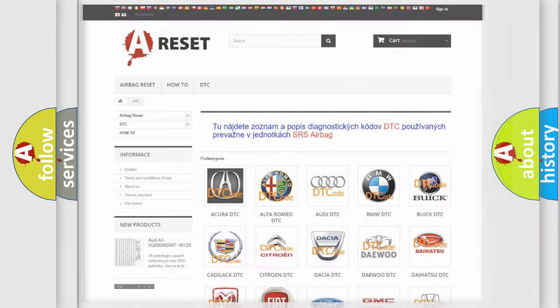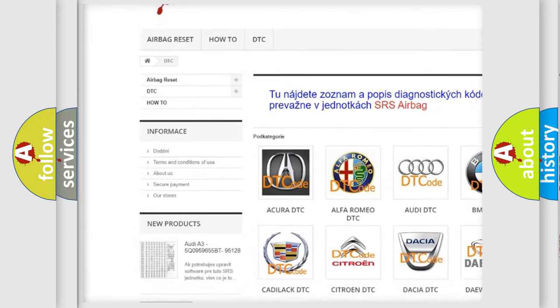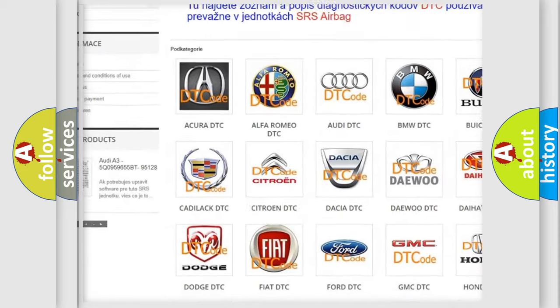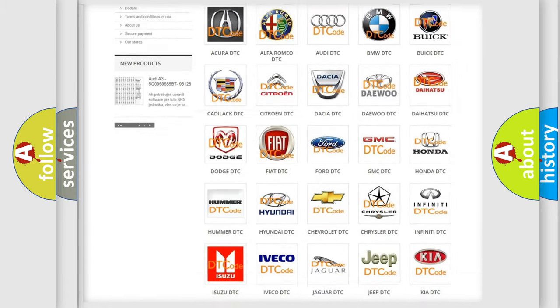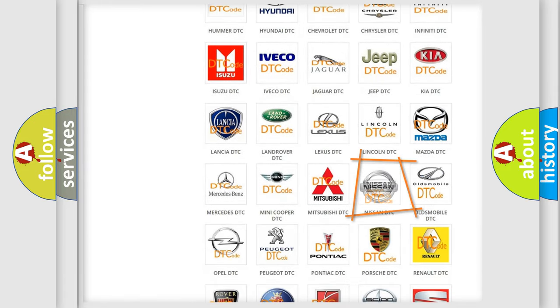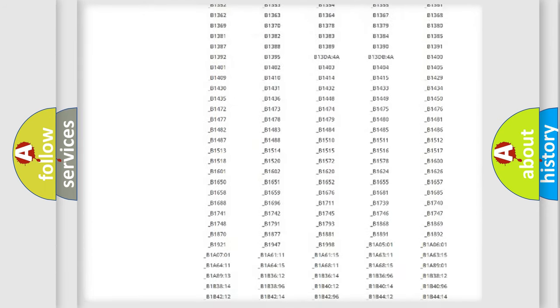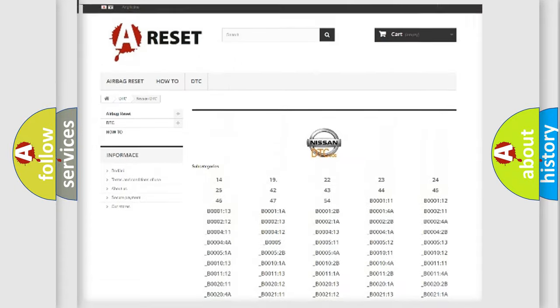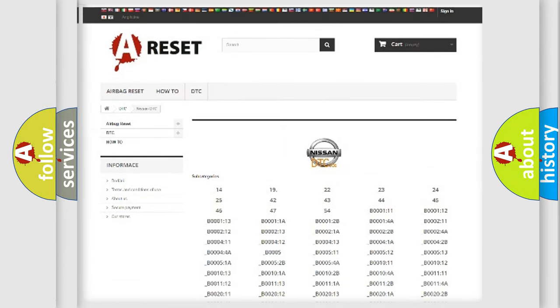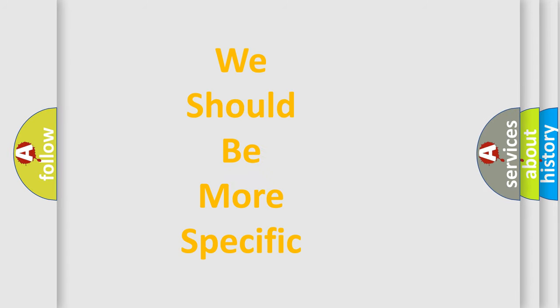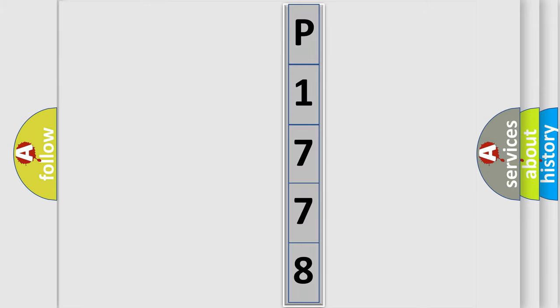Our website airbagreset.sk produces useful videos for you. You do not have to go through the OBD2 protocol anymore to know how to troubleshoot any car breakdown. You will find all the diagnostic codes that can be diagnosed in Nissan vehicles, and also many other useful things. The following demonstration will help you look into the world of software for car control units. The error code is split into two bytes consisting of 16 bits.